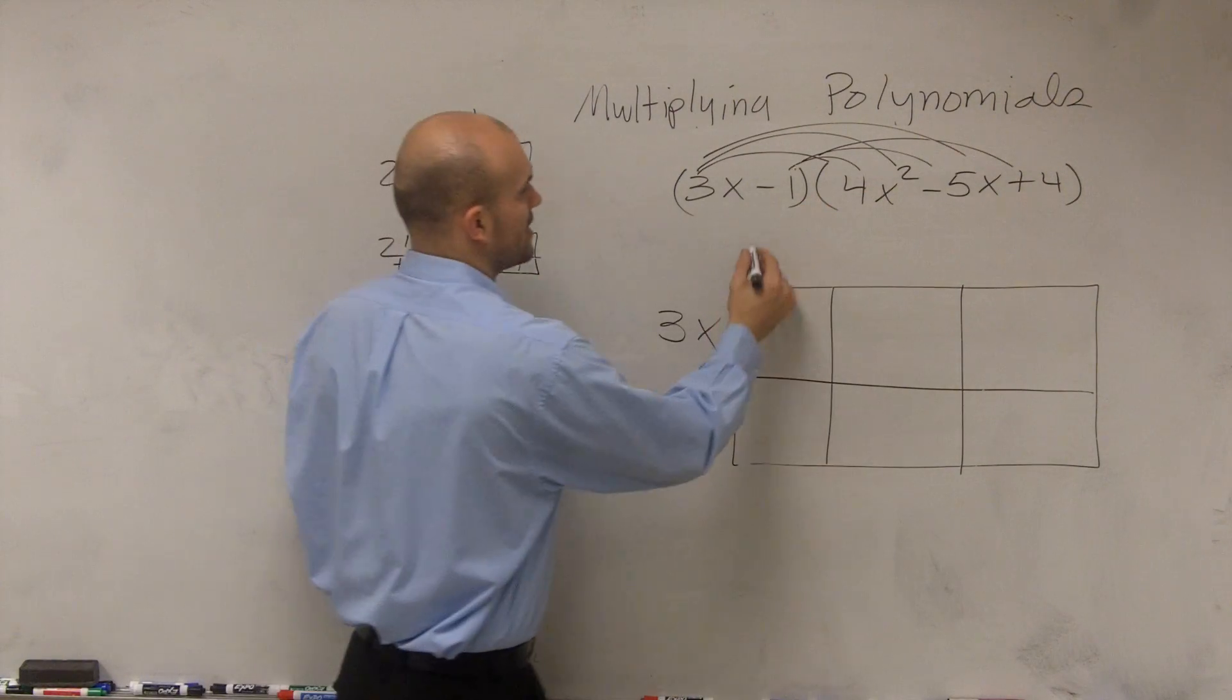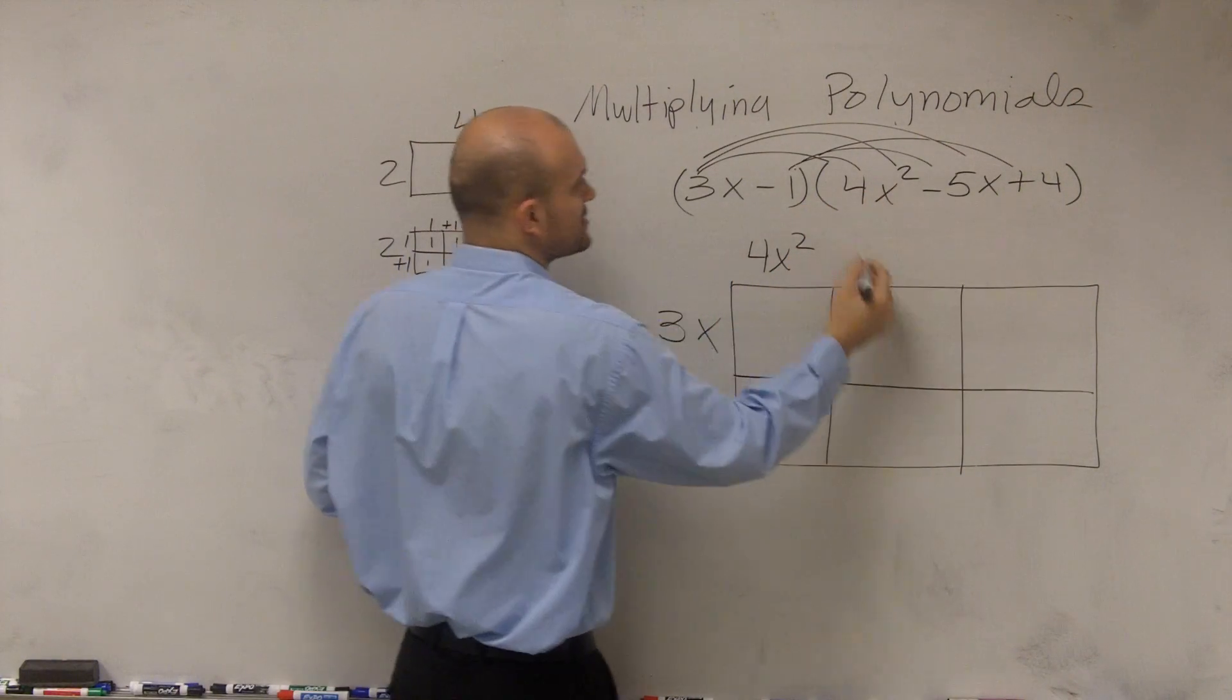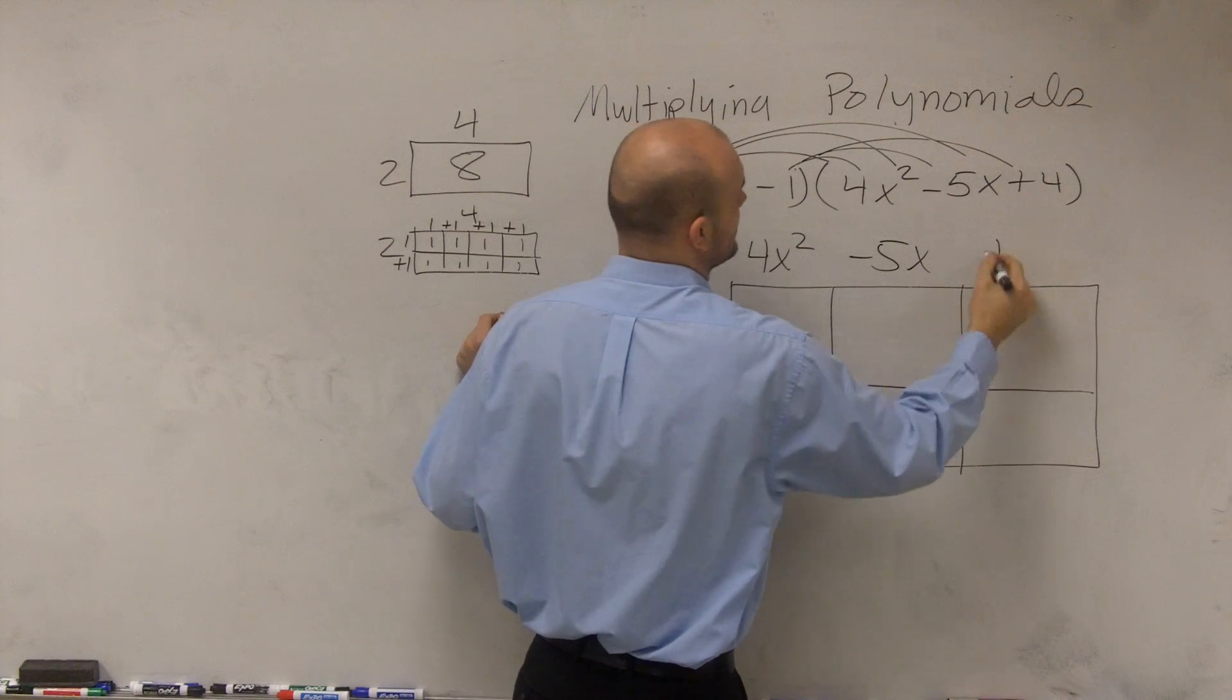So the first term is 4x squared, next one is negative 5x, and the last one is 4.